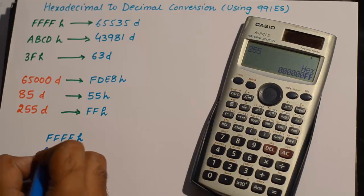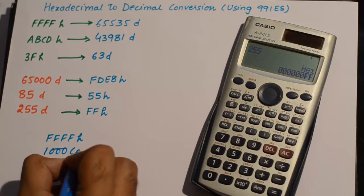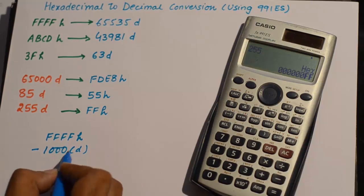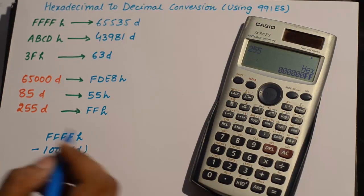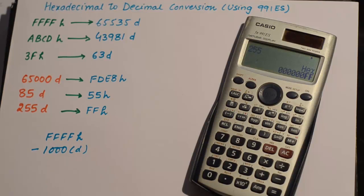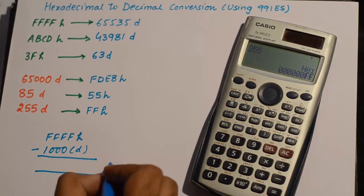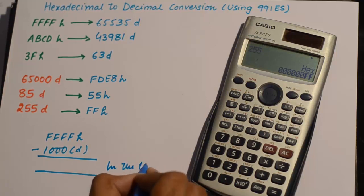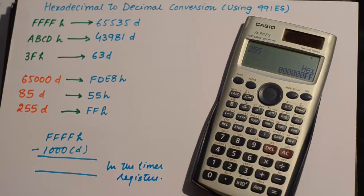Now those 1000 steps are in decimal. You want to subtract 1000 decimal from FFFF hexadecimal and then put the result in the timer registers. So how do we do that?